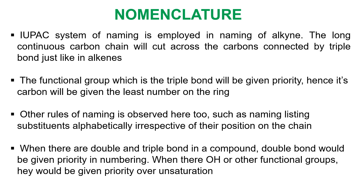In naming, the IUPAC system has been employed. First, consider the longest continuous carbon chain which cuts across the carbon connected by the triple bond, which is the functional group. When naming this compound, the functional group — which is the triple bond — must be given priority. Hence, naming must give the carbon that bears the triple bond the least number on the chain. Other substituents will be observed with respect to the naming of other hydrocarbons.